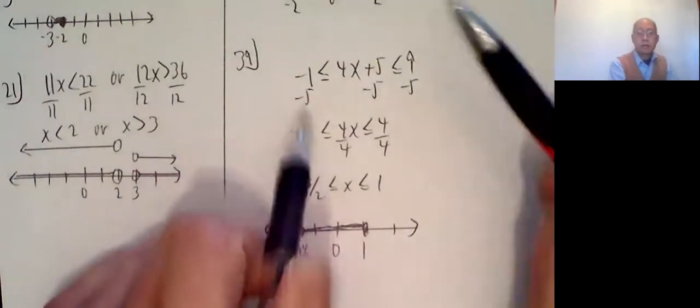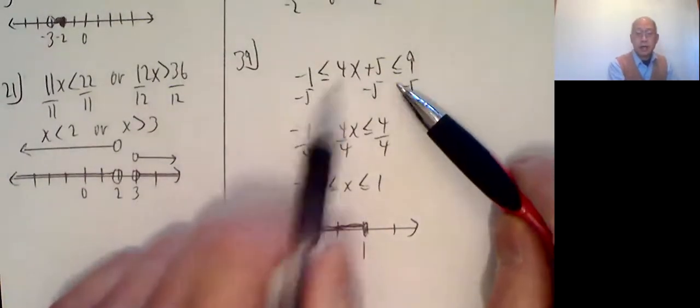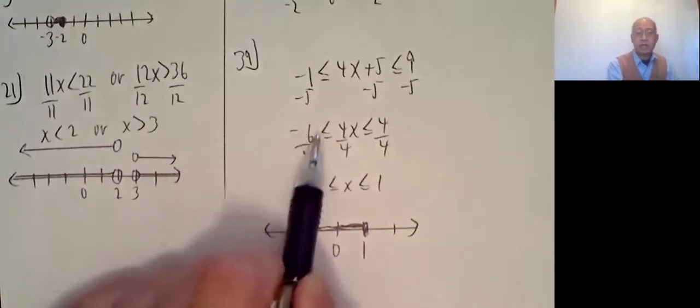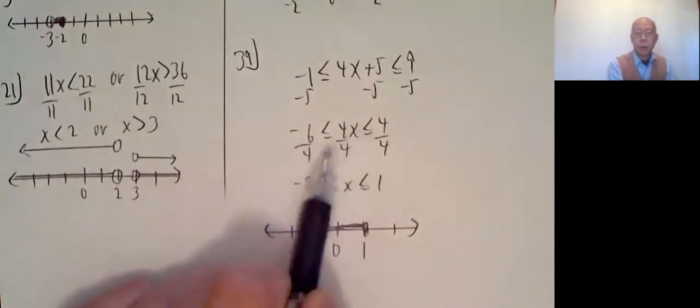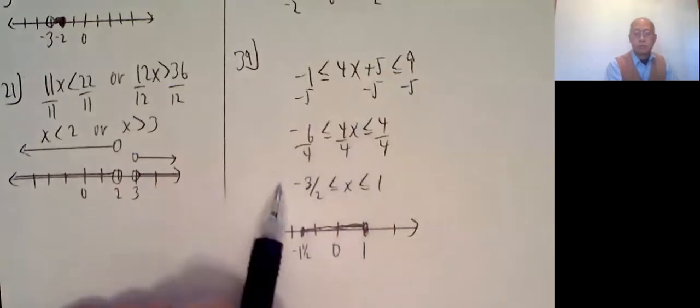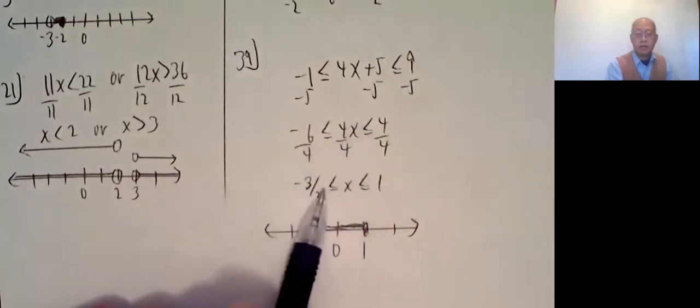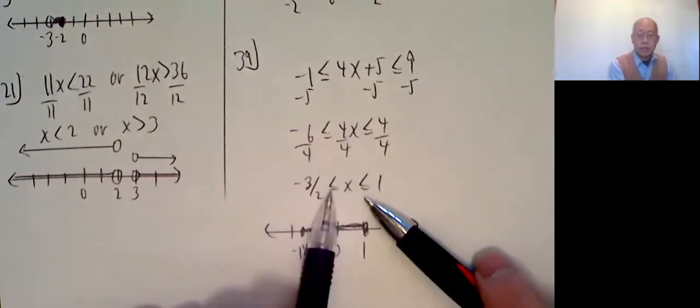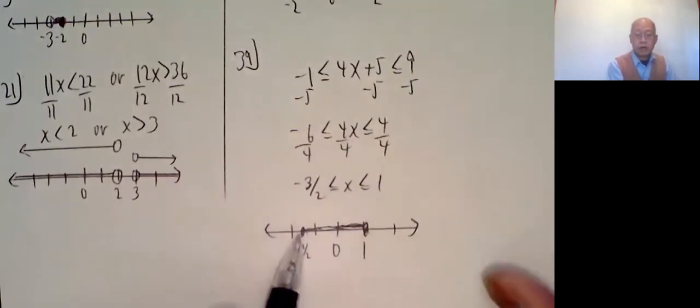39. Same kind of thing. Isolate the x. So subtract 5, subtract 5, subtract 5. Negative 6 less than or equal to 4x less than or equal to 4. Divide by 4. This reduces to negative 3 halves less than or equal to x less than or equal to 1. Line underneath, line underneath. Closed circle at negative 1 and a half, closed circle at 1, shading everything in between.